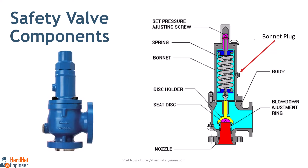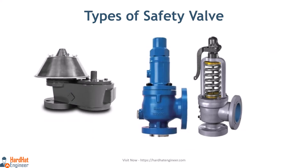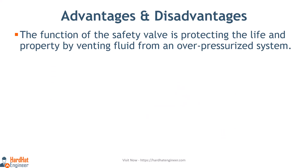Here you can see the conventional pressure relief valve. The main parts are the body, bonnet, disc, disc holder, seat, and spring. Based on seating material, conventional pressure relief valves are classified as metal-seated or soft-seated valves. The working principle is based on the balance of force — the spring load keeps the disc on the seat until the system pressure exceeds the spring force. The function of the safety valve is protecting life and property by venting fluid from an over-pressurized system.